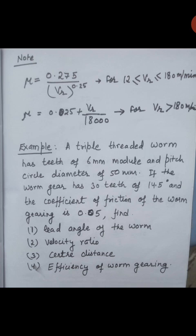This formula applies when Vr, the rubbing velocity, lies between 12 to 180 meters per minute. If the rubbing velocity is greater than 180 meters per minute, then μ is equal to 0.025 plus Vr upon 18000.